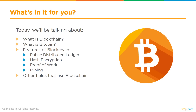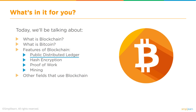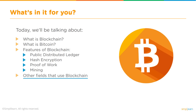So what's in it for us today? We will be talking about what is blockchain, what is Bitcoin, typical features of blockchain like public distributed ledger, hashing encryption, the proof of work consensus algorithm, mining techniques, how miners gain money, and other fields where blockchain is applicable.